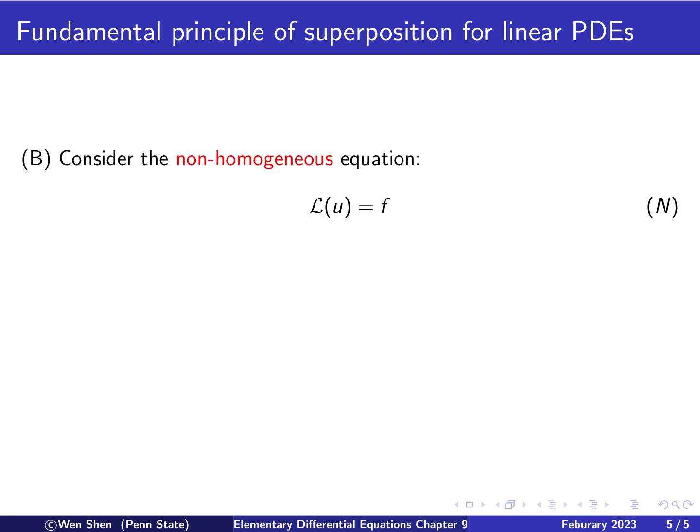Okay, so part B of this superposition involves the non-homogeneous equation. So let's consider a non-homogeneous equation where F is a function. So first part, let's say u_H is the solution of the homogeneous equation, and u_P is the solution of the non-homogeneous equation. Then, if you add them up, this function u is u_H plus u_P, and that is the solution for the non-homogeneous equation.